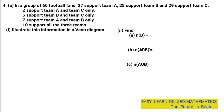The task is to illustrate this information in a Venn Diagram. Draw a Venn Diagram like the one shown, name the circles A, B, and C — these letters are the names of the sets.